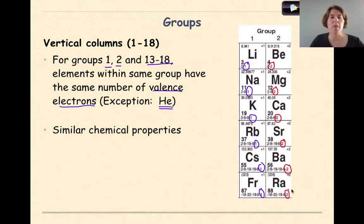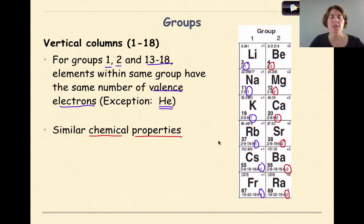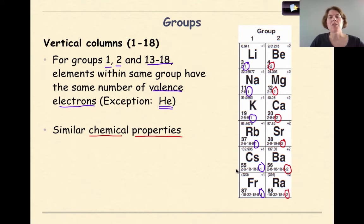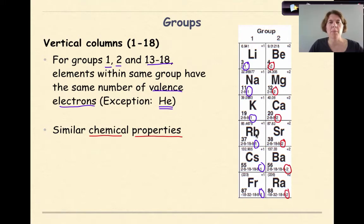As we go down a group, they all have the same number of valence electrons. The other thing we'll learn in future videos is that elements within the same group are going to have similar chemical properties — they won't be exactly the same, but they'll behave in similar ways. For example, group 1 metals are very reactive in water, and this general trend of similar chemical properties applies to groups 1 and 2.